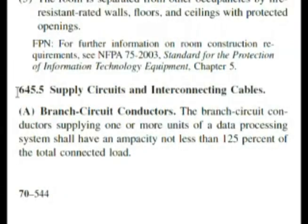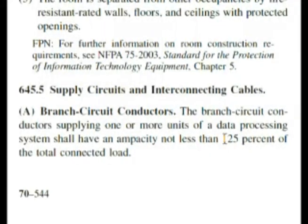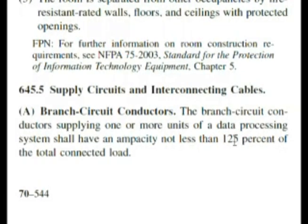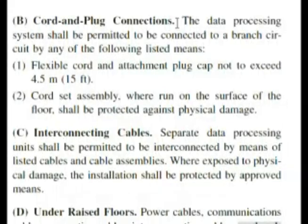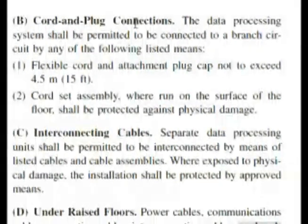Here we are at 645.5, supply circuits and interconnecting cables. It's talking about branch circuit conductors — that wasn't what we were looking for. Notice this number 125%, which we mentioned in an earlier question when it talks about branch circuits. We have to go to the top of the next column. Our next heading is cord and plug connections — that wasn't it.